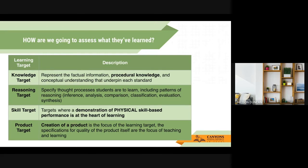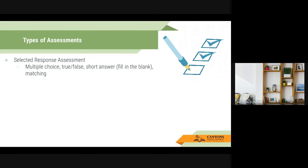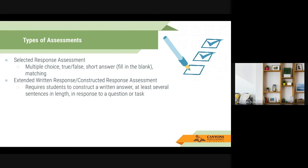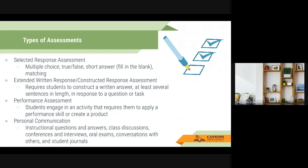Now that you've picked your target, we're going to look at the best appropriate ways to assess it. The different types of question items are: selected response, which includes multiple choice, true/false, and short answer such as fill-in-the-blank and matching. We have extended written response, like essay questions or constructed responses of two to three sentences. We have performance assessment, where students engage in a specific activity requiring them to apply a performance skill or create a product. And then we have personal communication — one-on-one interviews, class discussions, oral exams, student journals, and similar formats. These are the different types of items you can use on your assessment.